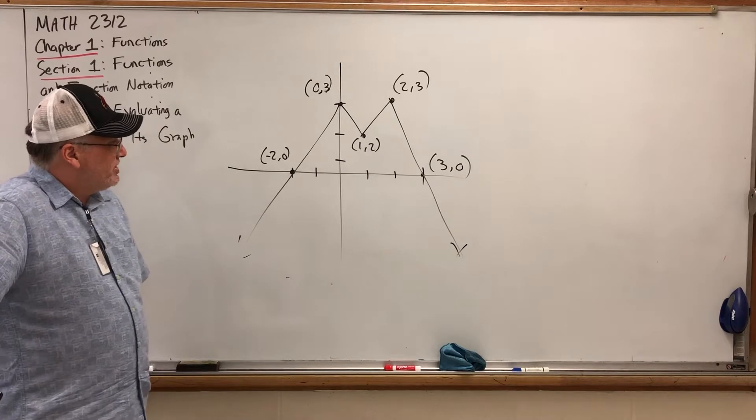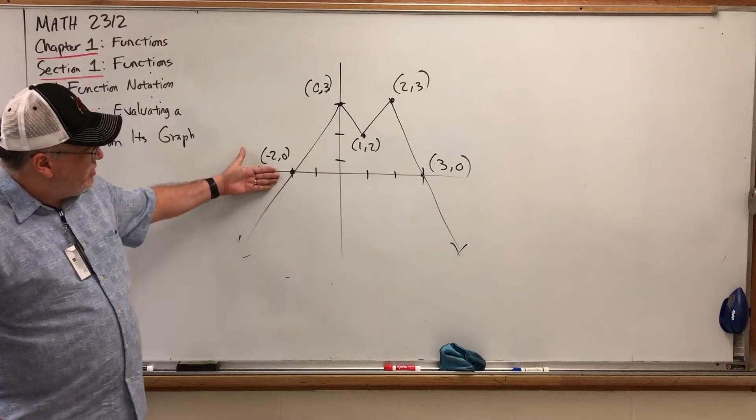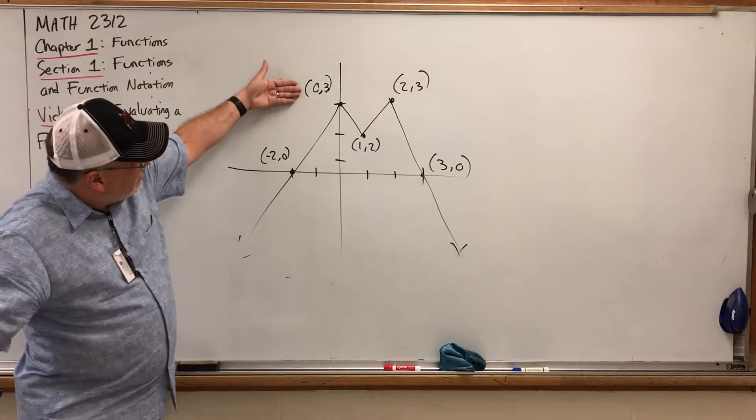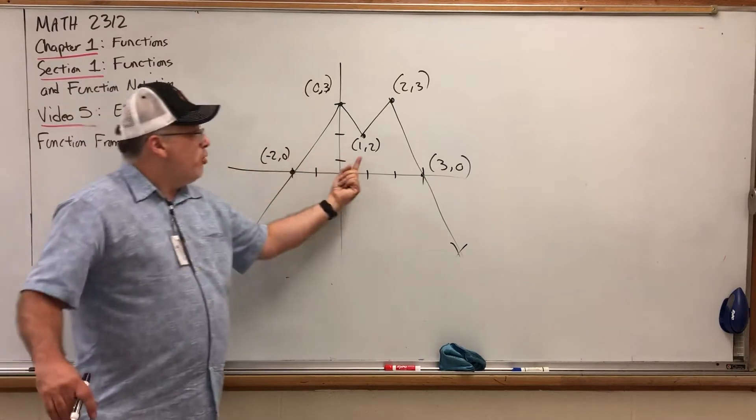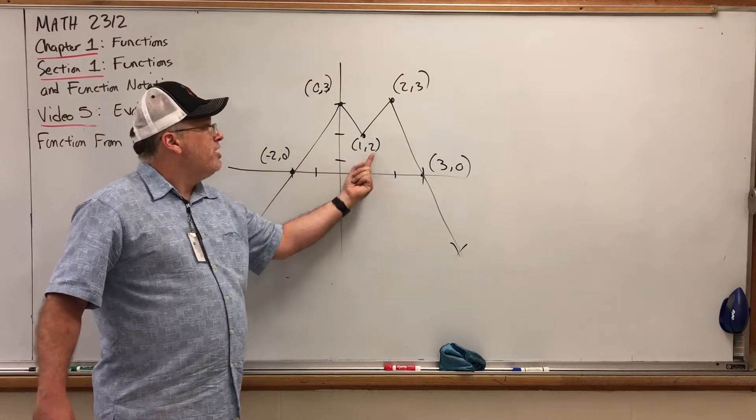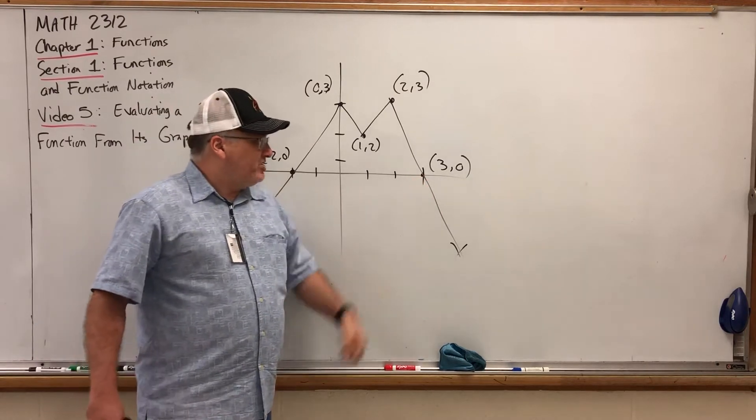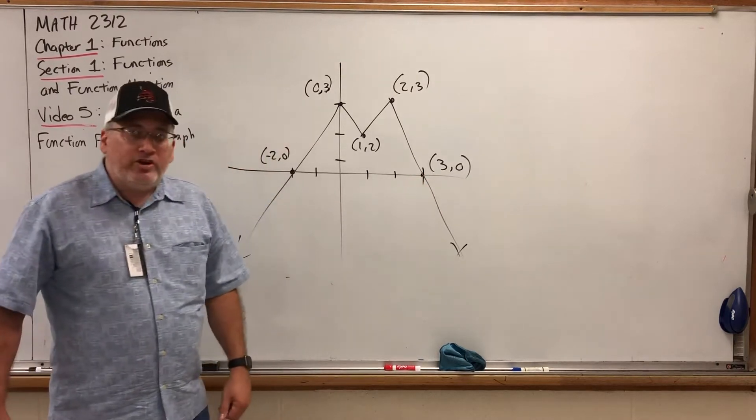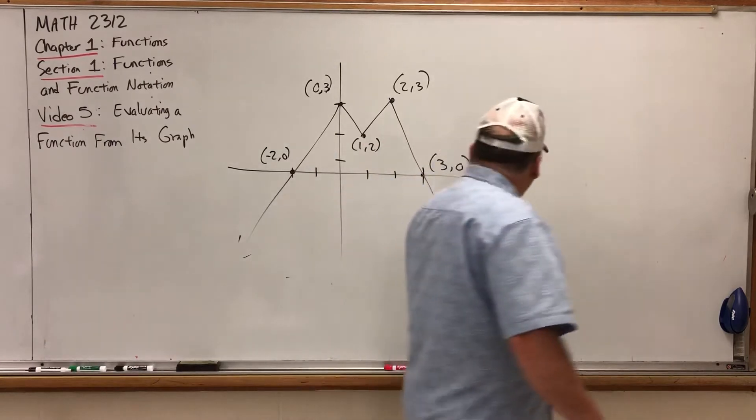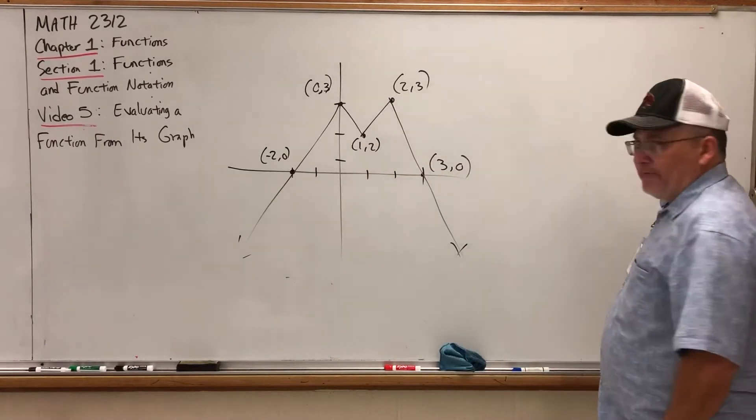Now, this graph does go through some certain points that I've already labeled. Negative 2, 0 is an x-intercept. 0, 3 is a y-intercept. The point 1, 2 in quadrant 1. The point 2, 3 also in quadrant 1. And we have a second x-intercept over here at 3, 0. From this graph, I can ask you several questions.